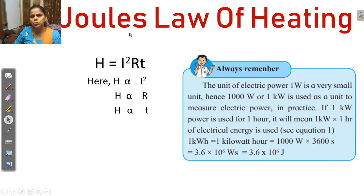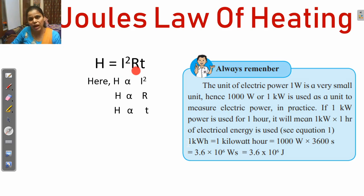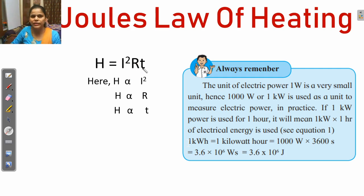This is Joule's law of heating. In our previous lecture, I explained the derivation of Joule's law of heating. The equation is H equals I squared R T, where I is the current flowing in the circuit, R is the resistance, T is the time, and H is the heat.